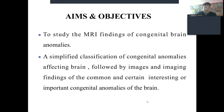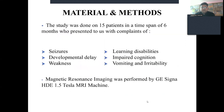The aims and objectives of this study are to examine the MRI findings of congenital brain anomalies and present a simplified classification of congenital anomalies affecting the brain, followed by imaging findings of common and important congenital brain anomalies. The study was conducted on 15 patients over six months who presented with complaints of seizures, developmental delay, weakness, learning disabilities, impaired cognition, vomiting, and irritability. MRI was performed using a GE Signa HD 1.5 Tesla MRI machine.